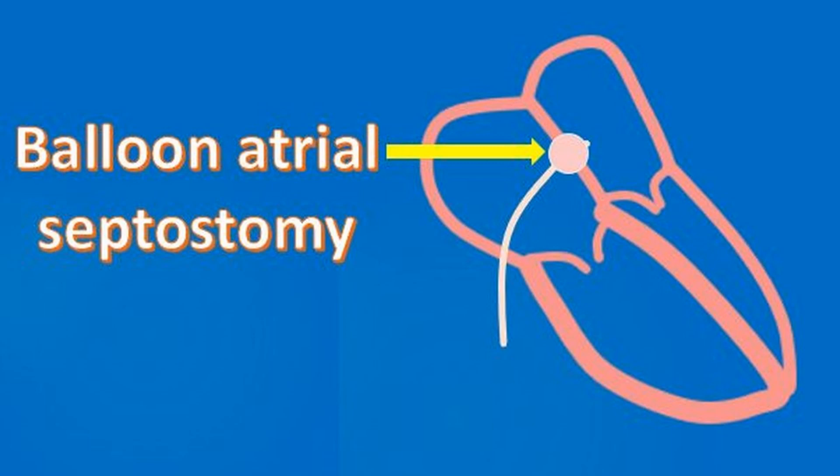The balloon atrial septostomy catheter is introduced through the umbilical vein if done early after birth. The procedure can be done under fluoroscopy or echocardiography guidance and is an emergency palliative procedure. Corrective surgery is done later when the physical condition of the baby permits.